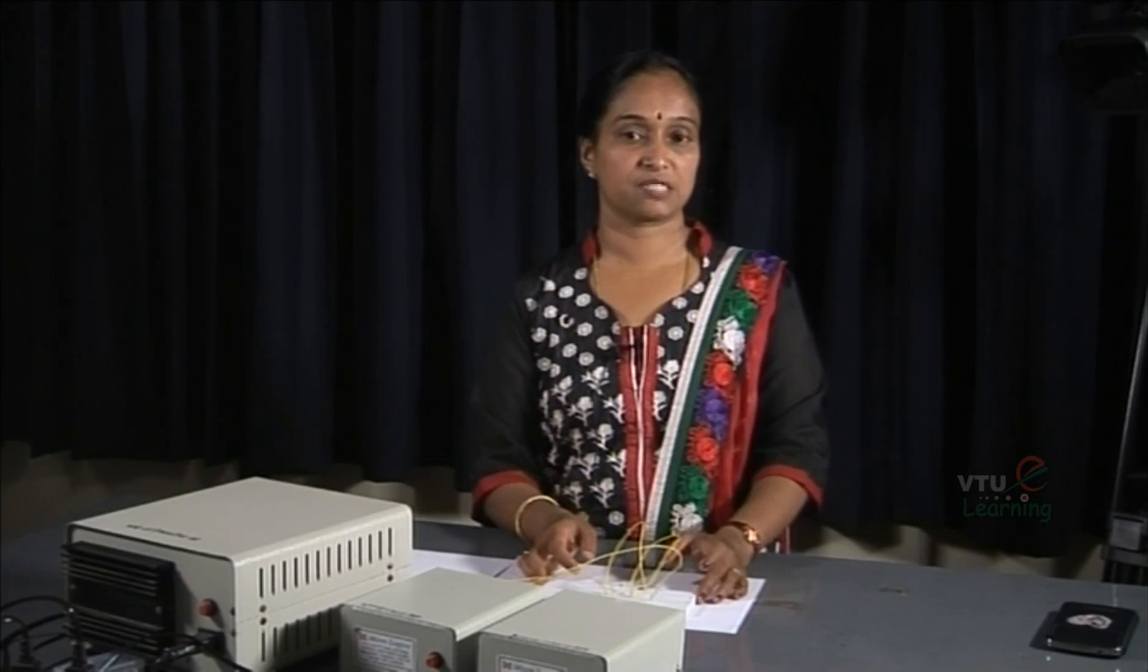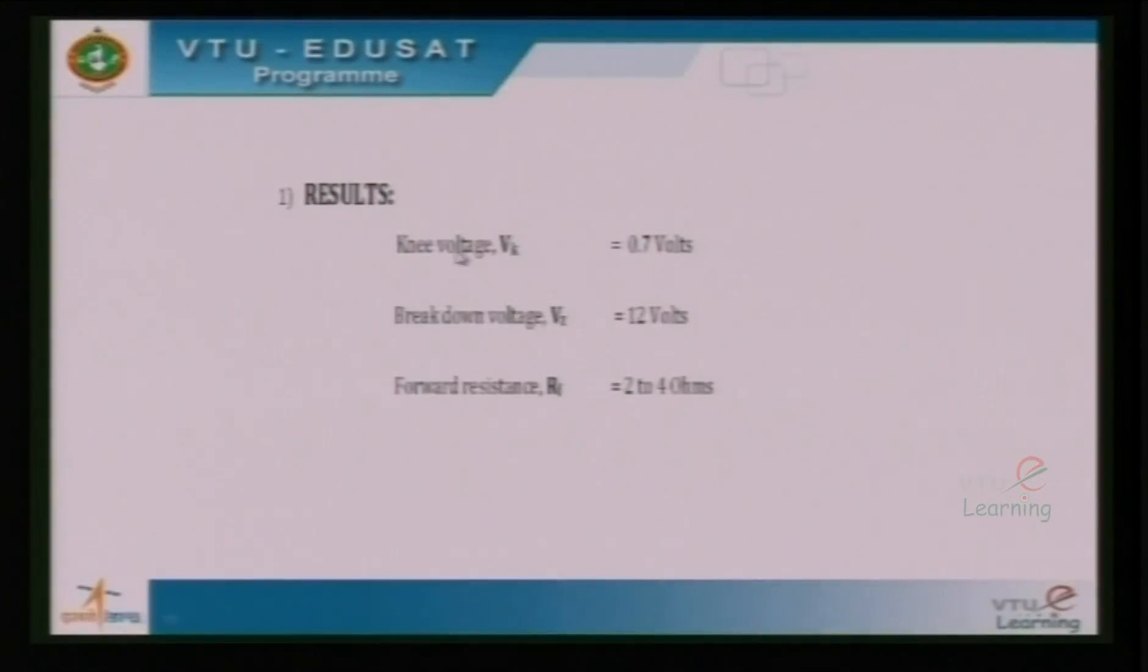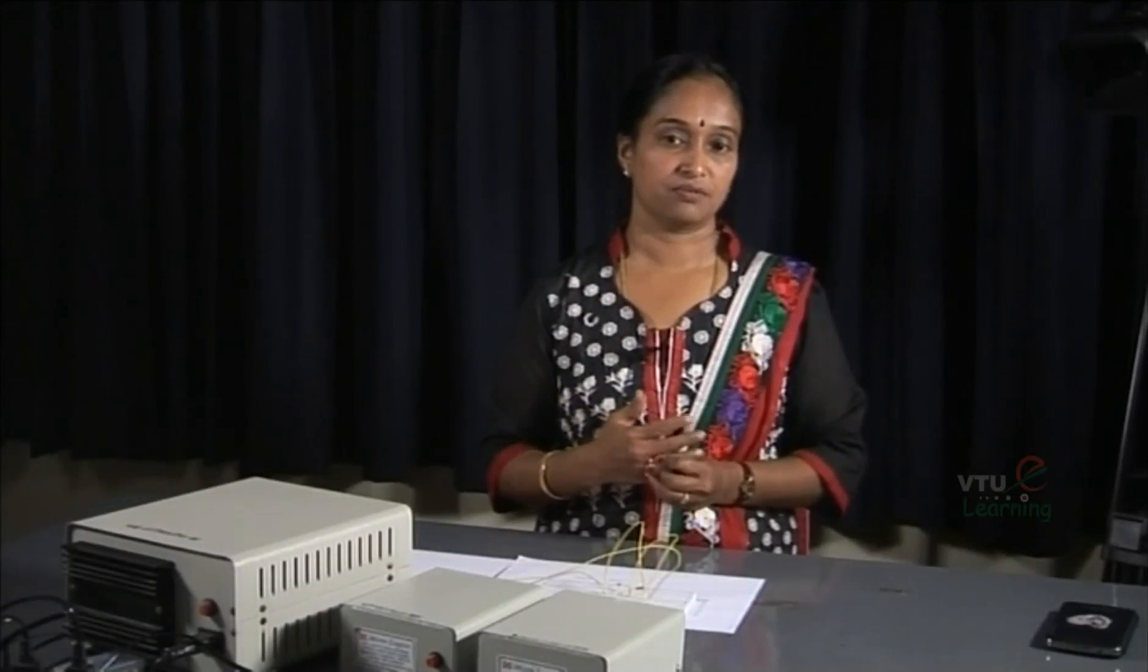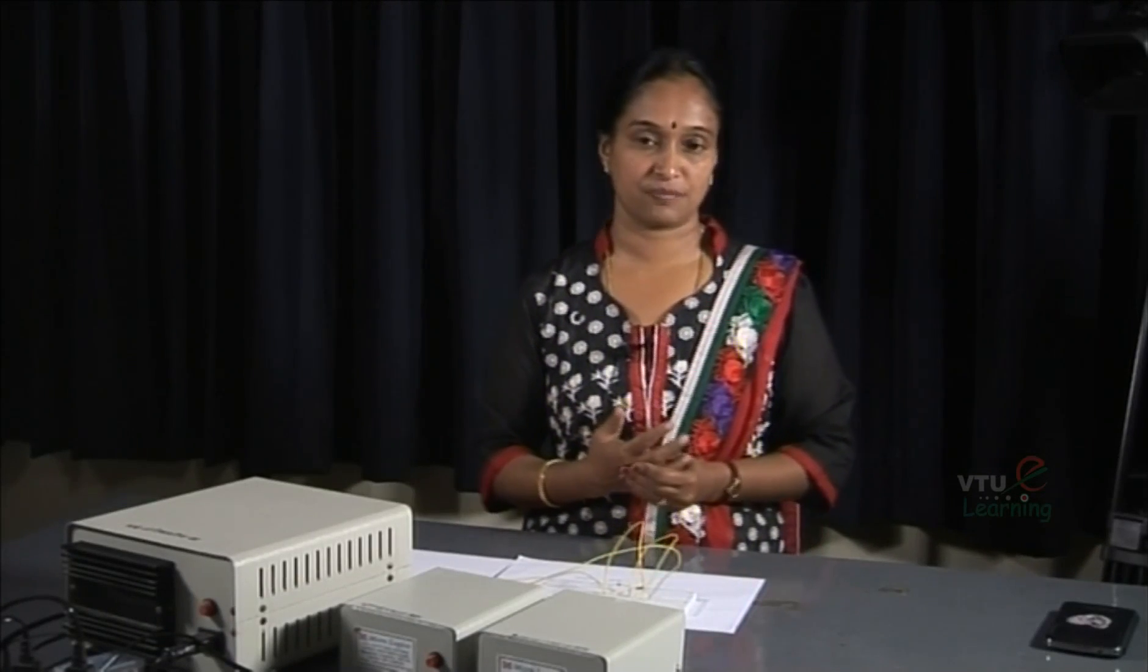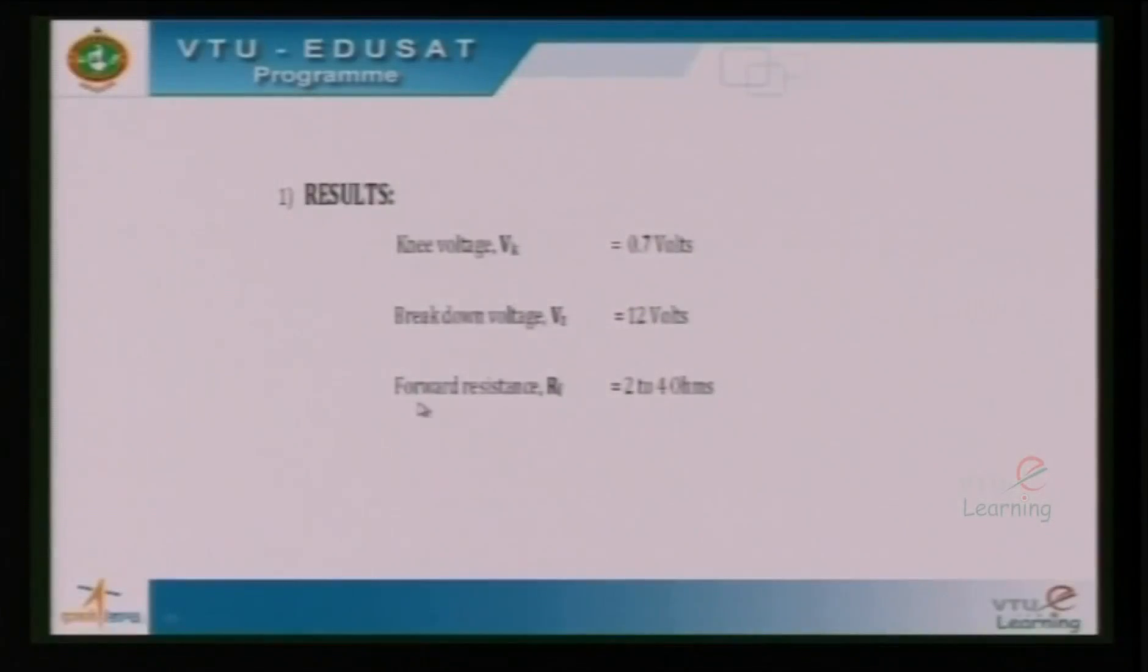Results of the experiment are knee voltage which signifies the barrier voltage across the junction and the breakdown voltage comes around 12 volts because for this particular diode, the doping concentration is such that it is giving a breakdown at 12 volts and forward resistance comes around 2 to 4 ohms.